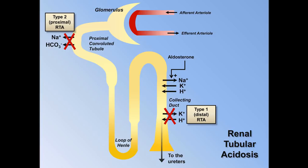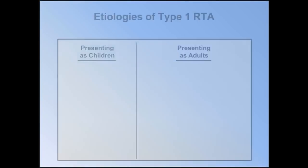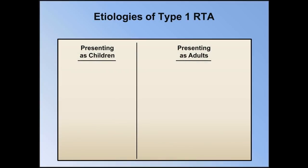Type 2 RTA, also known as proximal RTA, is caused by a defect in the proximal convoluted tubule where bicarbonate is normally reabsorbed. Finally, there is type 4 RTA, which is not a kidney problem per se, but rather a deficiency of the hormone aldosterone. The etiologies of type 1 and 2 RTA can be broken down into those that present as children and those that present as adults. When type 1 RTA presents in childhood, the cause is usually one of a number of rare genetic disorders. Occasionally the RTA is idiopathic, though many of these cases are likely genetic.